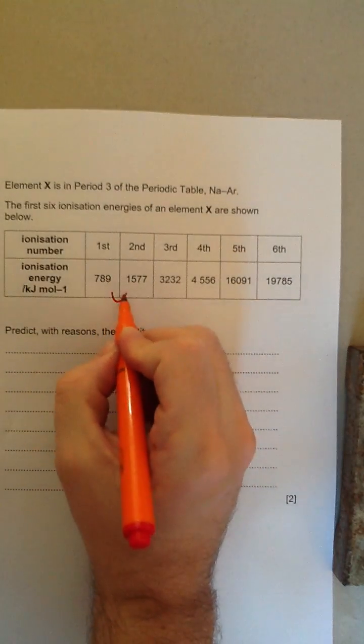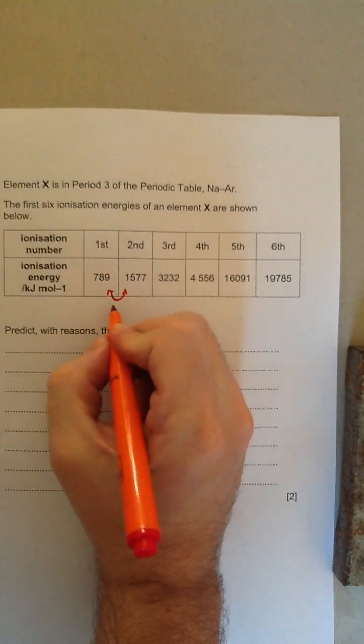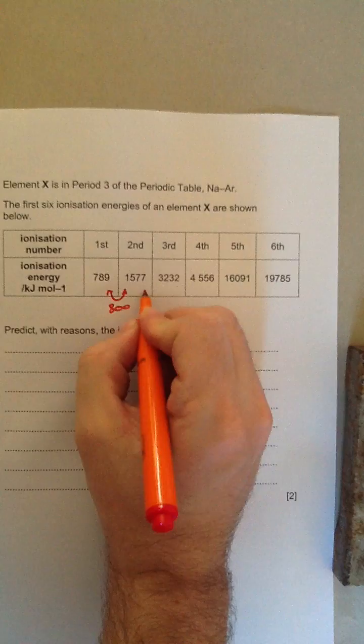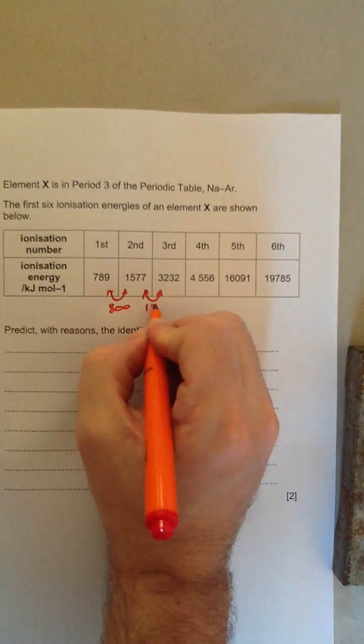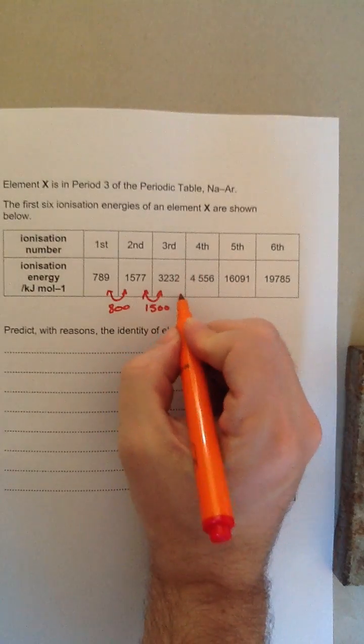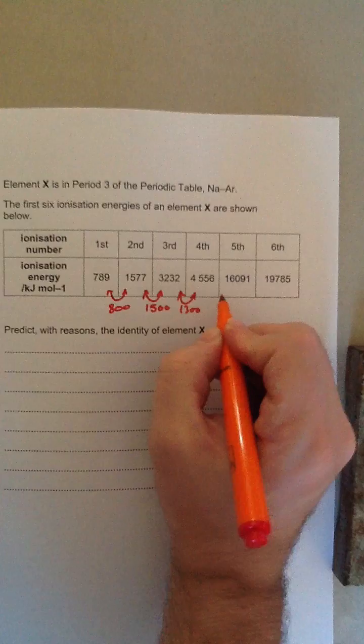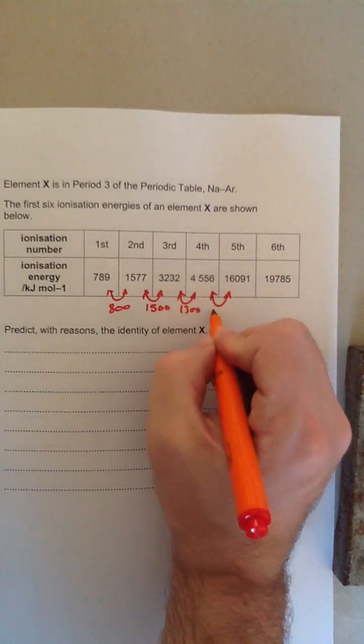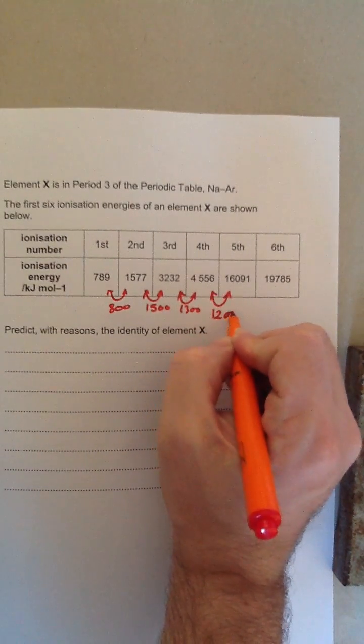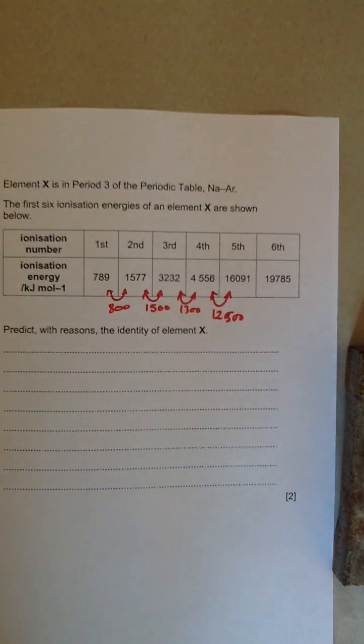So the difference from there to there, approximately, is about 800. From there to there is about 1,500. From there to there is about 1,300-ish. But the jump from there to there is about 12,500-ish. Again, we're just looking at rough numbers.